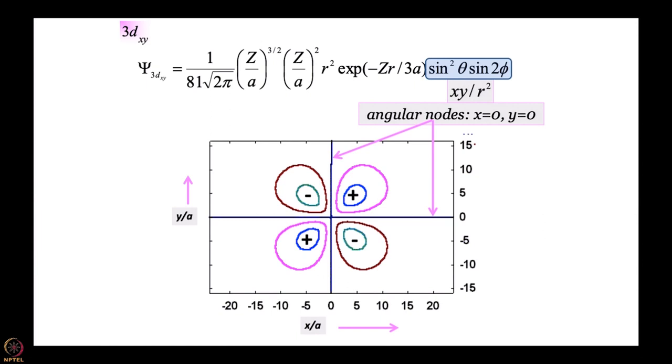We come to 3d xy: sin² theta sin 2φ. Again using the relationship between sin 2φ and sin φ cos φ, what is sin 2φ? Sin 2φ is essentially 2 sin φ cos φ. Sin² theta multiplied by sin φ cos φ becomes sin theta sin φ multiplied by sin theta cos φ. You get xy, and of course it has to be divided by r multiplied by r, so you get xy/r². xy equal to 0 means x equal to 0 is a node. Once again, the moment you cross wherever you cross the node, wave function has to change sign. This is 3d xy.